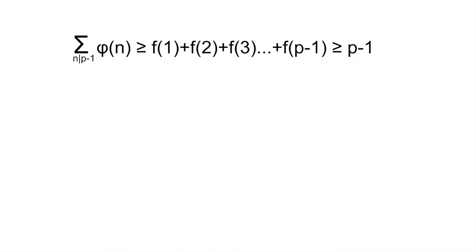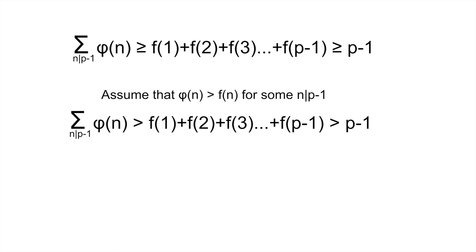Now, assume for contradiction that there is some n dividing p minus 1 such that f of n is strictly smaller than phi of n. Then, the sum over divisors of p minus 1 of phi of n is strictly greater than f of 1 plus f of 2 dot dot dot all the way up to f of p minus 1, which is greater than or equal to p minus 1.